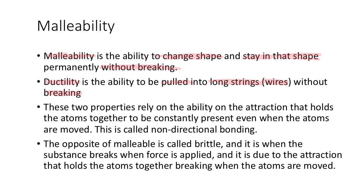Now, if you think about what happens when you change shape, it's that the atoms are moved. And once the atoms are moved, they still need to be held together. So effectively, these two properties rely on the ability of the attraction that holds the atoms together to be constantly present, which means the bonds don't break even when the atoms are moved. Whatever is holding them all together — those forces need to hold them together even if the atoms move, otherwise it'll break and therefore not be malleable. This is called non-directional bonding.